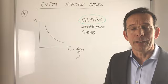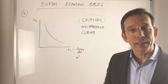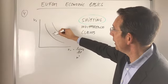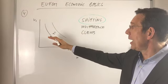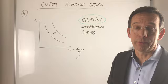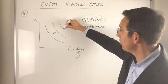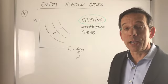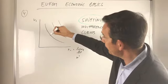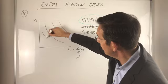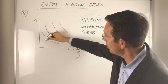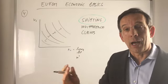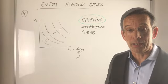What about shifting indifference curves? Yes, that's possible. You could shift to the right, then a higher utility level can be realized. Shifting to the right means you go to a higher utility level. Shifting to the left means you go to a lower utility level. So shifting around: higher and lower utility levels.